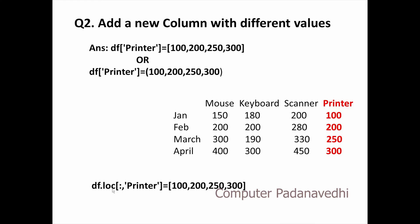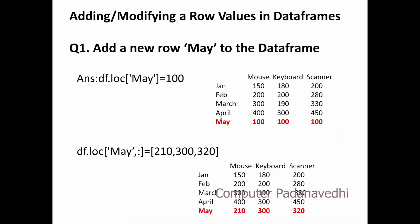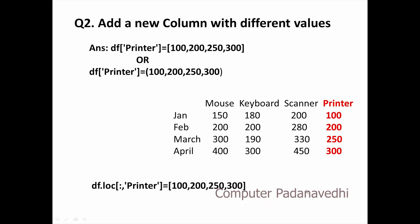This will populate the DataFrame with a value of 100. If you want to add a column using the loc function, you can add a column that way. Now we will create a column here — let's do this.